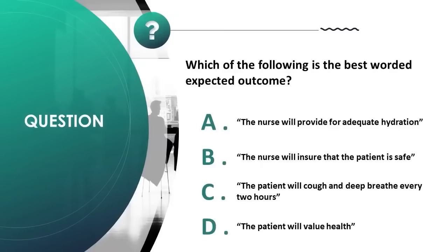Which of the following is the best-worded expected outcome? A) the nurse will provide for adequate hydration, B) the nurse will ensure that the patient is safe, C) the patient will cough and deep breathe every two hours, D) the patient will value health. Correct answer is C.